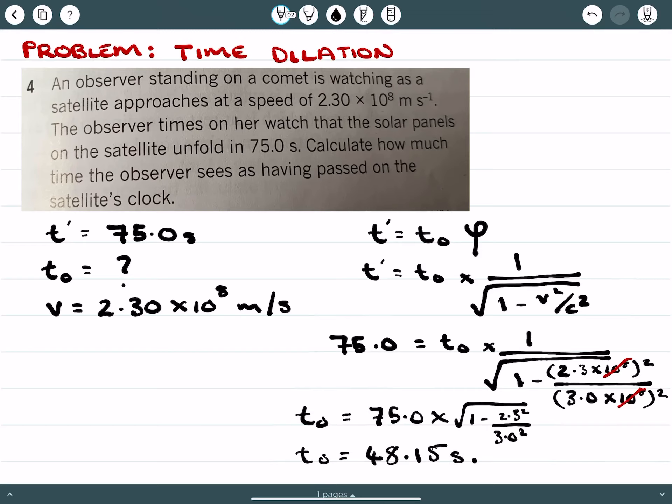We can ascertain that yes, this is the correct answer. But why can we estimate that yes, this sounds correct? It's because proper time is less than dilated time. And because this is 48.15 seconds, that is less than the 75 seconds that the observer outside of the moving frame of reference observes.